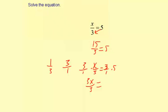And 3 over 1 times 5, that's just 3 times 5, or 15. Now the 3s simplify out, and you get x equals 15.